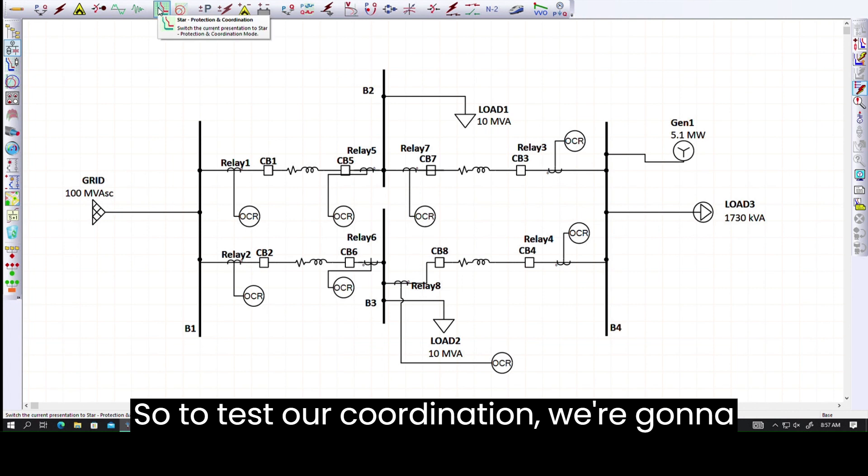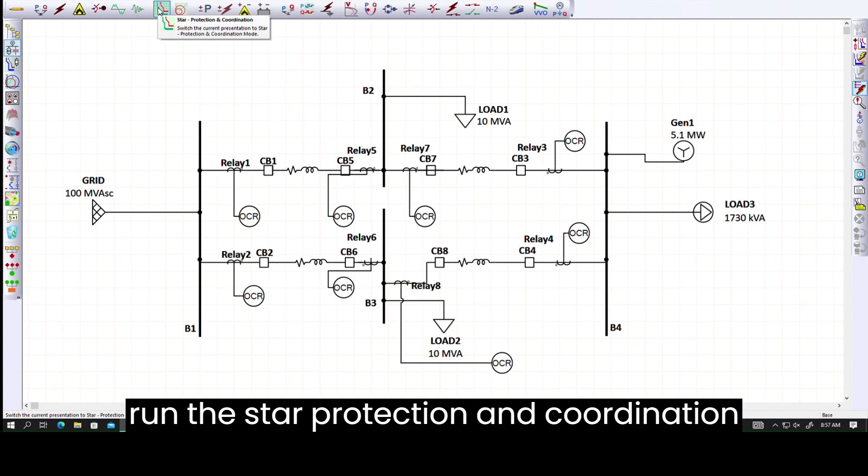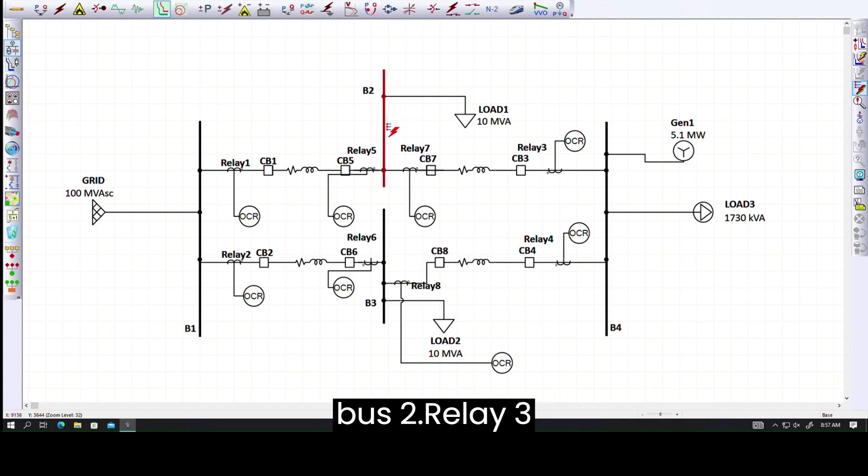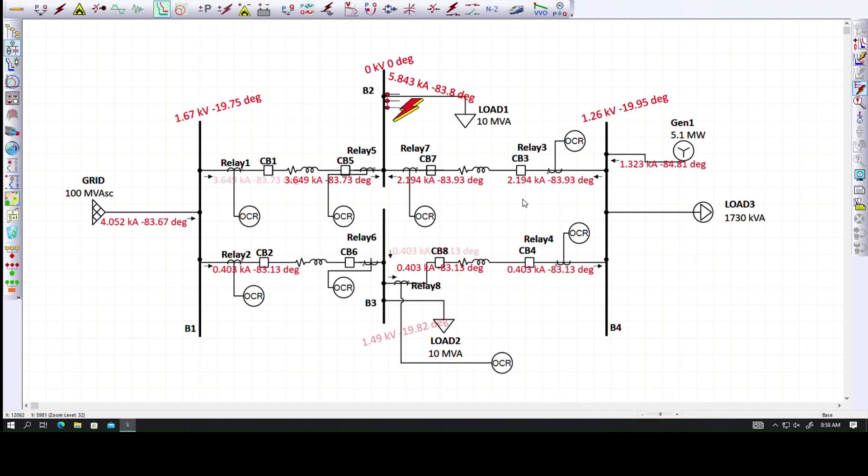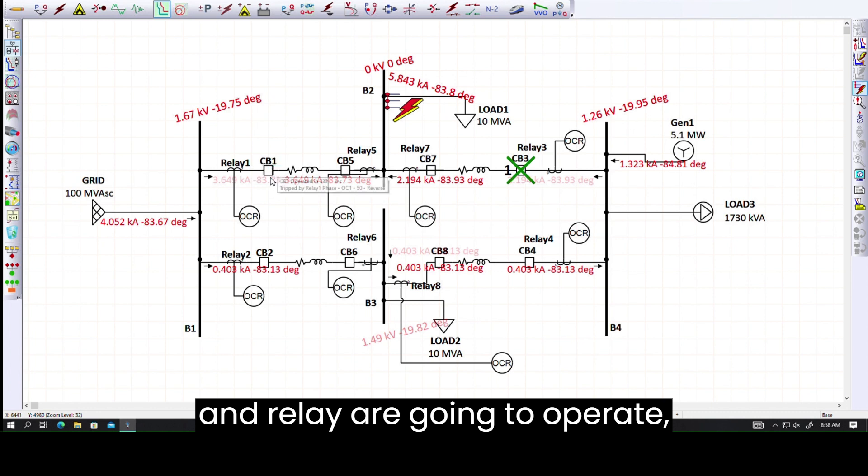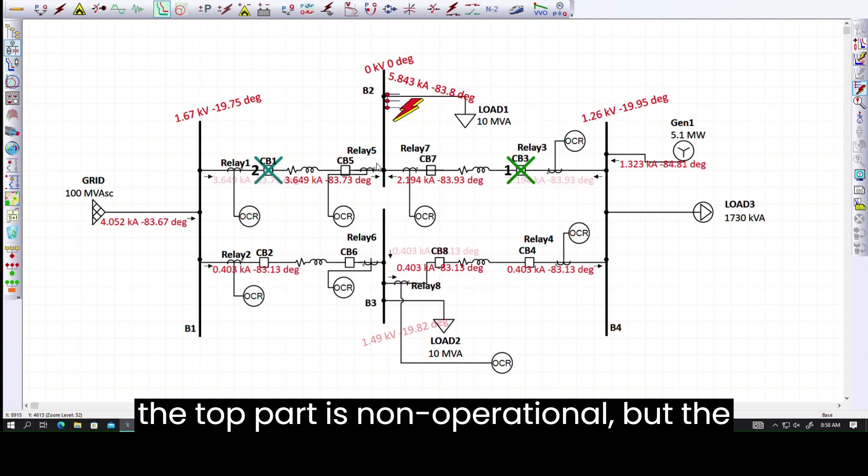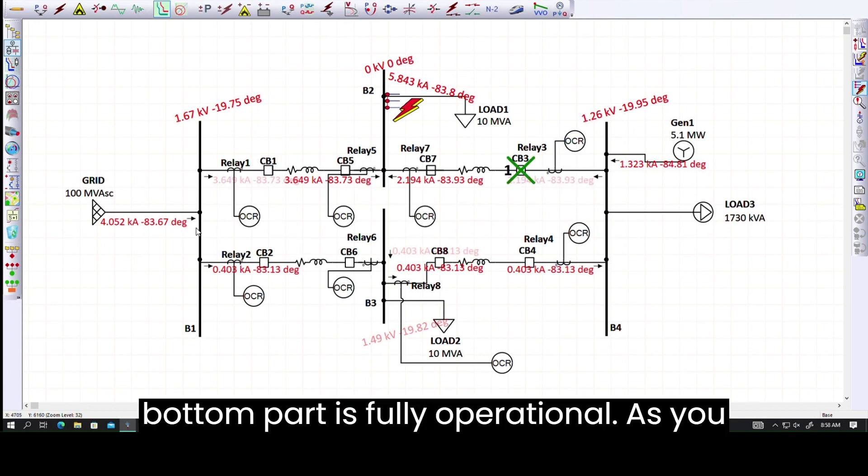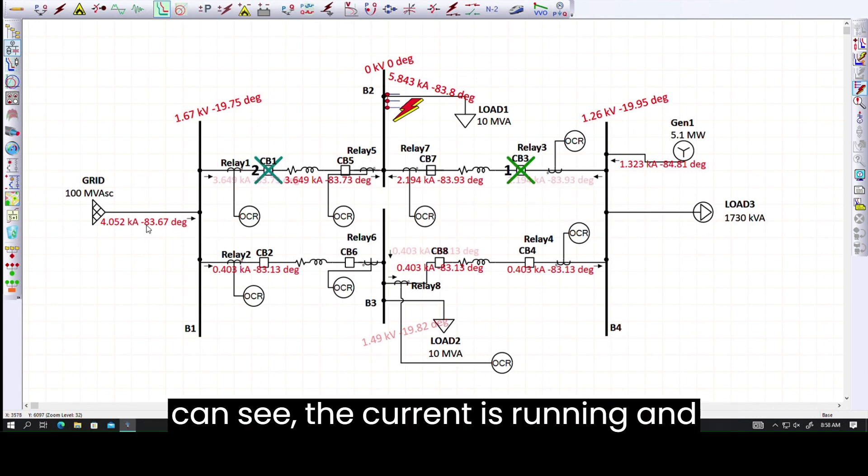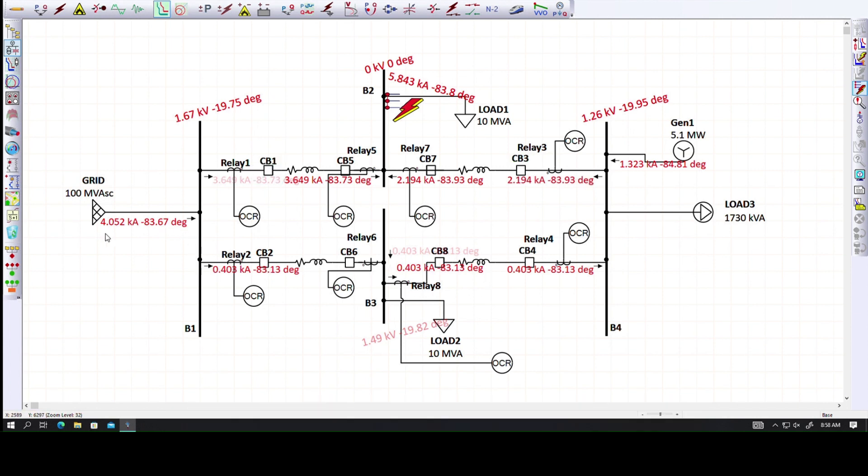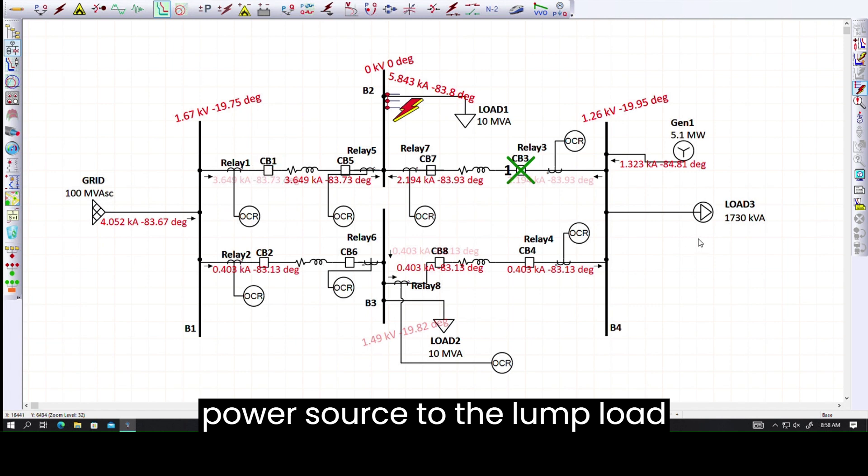To test our coordination, we're going to run the star protection and coordination study, putting fault insertion in bus 2. Relay 3 and relay 1 are going to operate, isolating the fault at the top part. The top part is non-operational, but the bottom part is fully operational. As you can see, the current is running and flowing here from the power source to the lump load successfully.